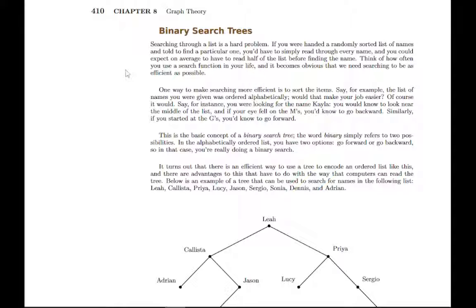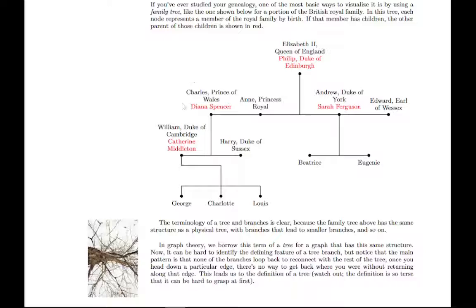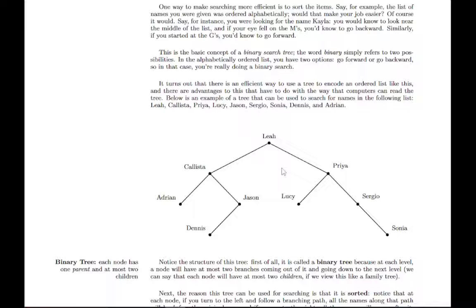A binary tree means a tree that has, at each step, up to two branches. If you look at a tree like this, this is called a binary tree because at each node, as it branches out from there, there are potentially two branches, but no more. Leah, for instance, has two branches. Calista has two branches. Adrian doesn't have any. Jason has one, but none of them have more than two branches coming out from them. This is a binary tree, as opposed to this family tree up here where this branch branches off into three segments. That would not be a binary tree. It's a binary tree because there's at most two children for each parent.